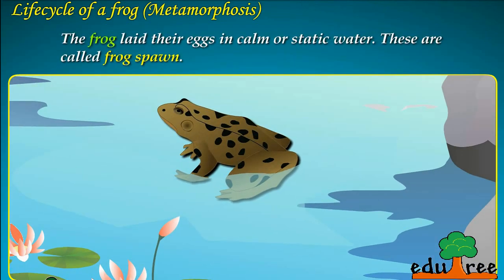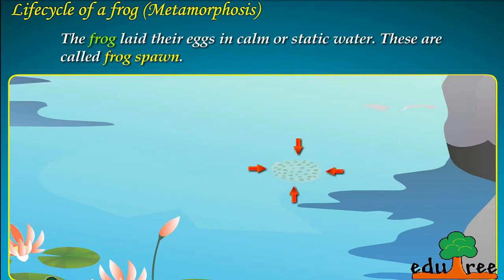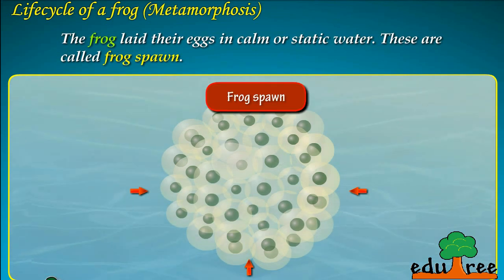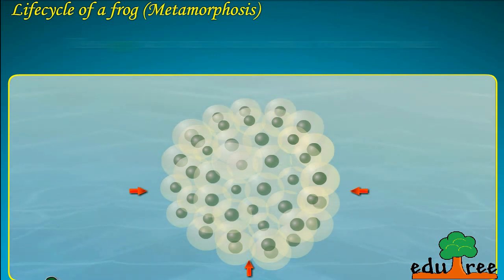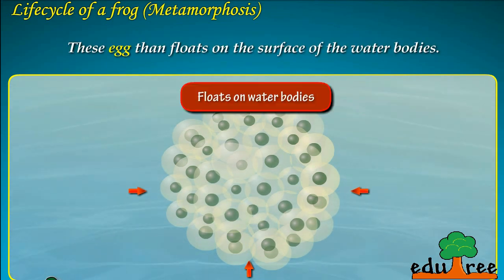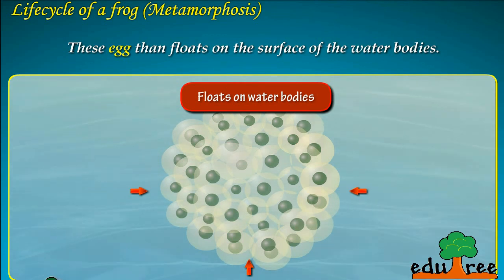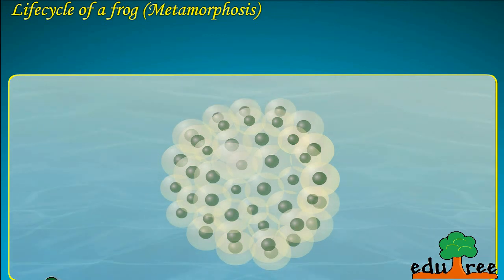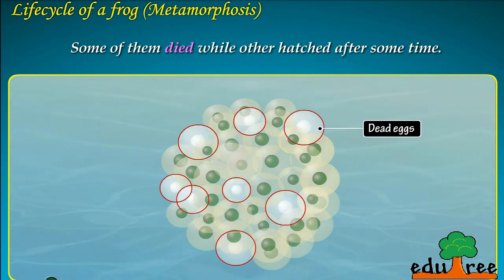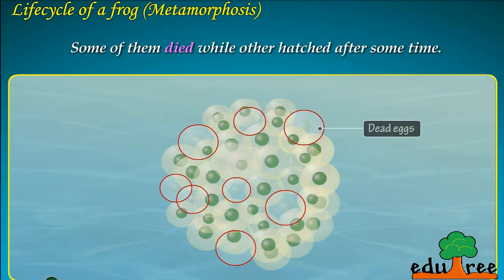Frogs lay their eggs in calm or static water. These are called frog spawn. These eggs then float on the surface of the water bodies. Some of them die, while others hatch after some time.